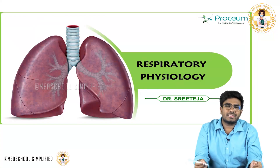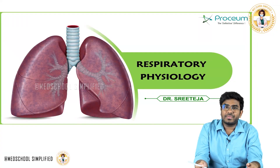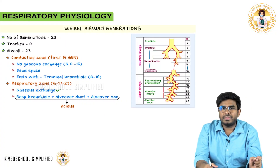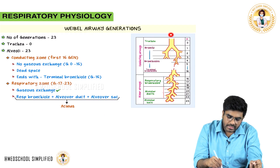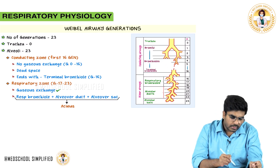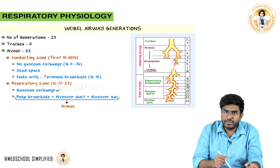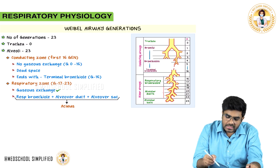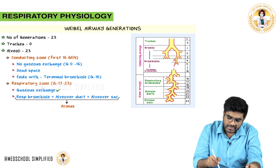Welcome back. In this video let's discuss respiratory physiology, beginning with airway generations. The entire respiratory tract is divided into small segments called generations. Totally the airway is divided into 23 generations, starting from the trachea all the way to the alveolar sacs.